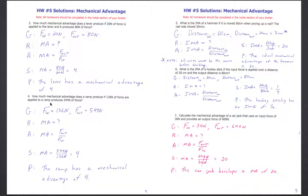How much mechanical advantage does a ramp produce if 136 Newtons of force are applied and it produces 544 Newtons of force? Force in = 136 Newtons, force out = 544 Newtons. MA equals force out divided by force in: 544 Newtons ÷ 136 Newtons. Newtons cancel out — again we get a mechanical advantage of 4. We multiplied our force four times.